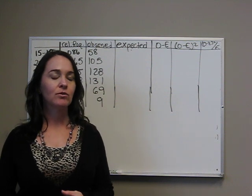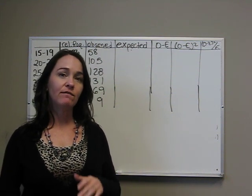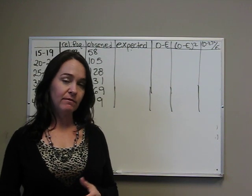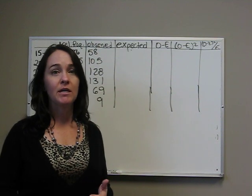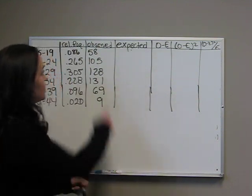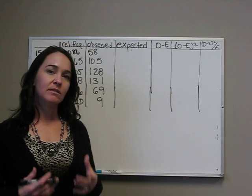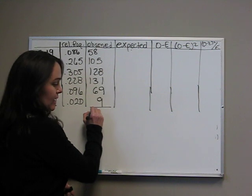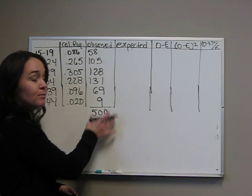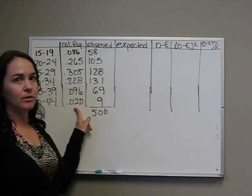We always need to make sure that our assumptions are met. In this case, we've got to find the expected values, which is E equals N, the sample size, times P, the probability. Since we have six different sets of data, we're going to have six different expected values. N is the total of our observed is 500. P is a probability or relative frequency.